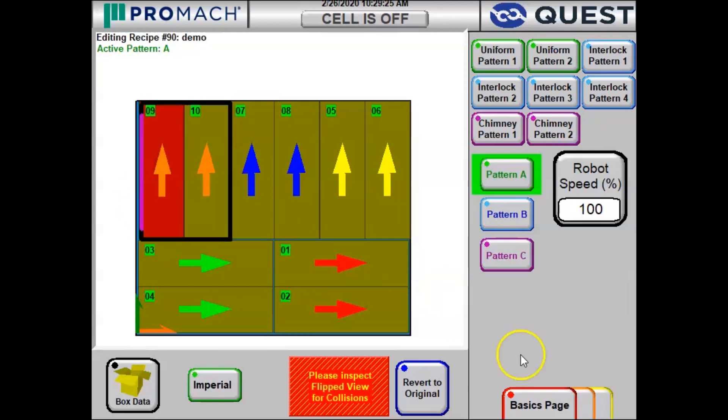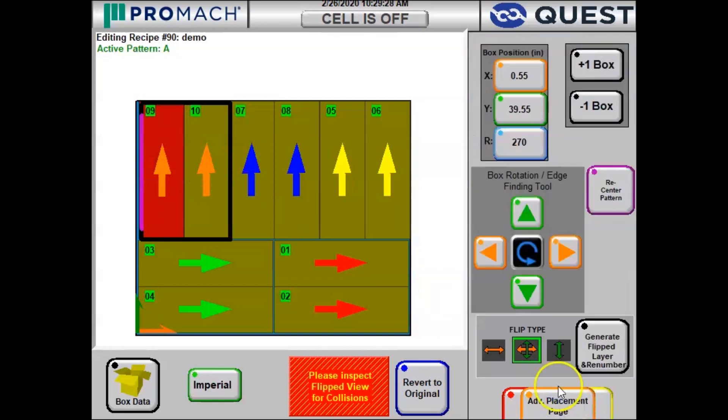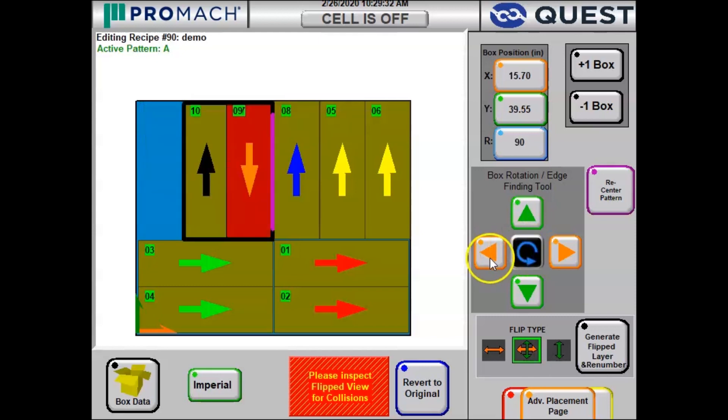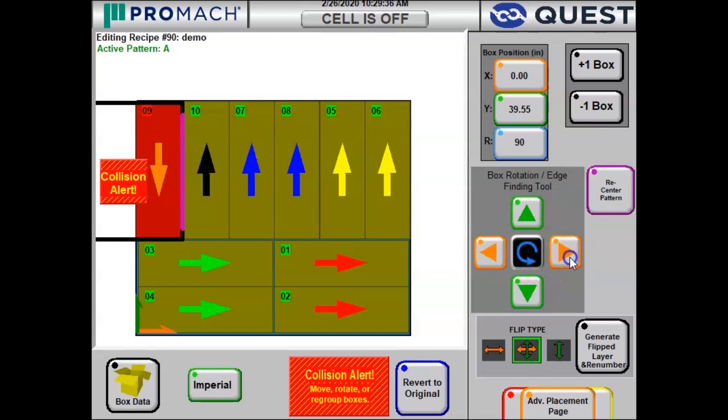So to do that, we select the box we want to flip and we're going to go to the Advanced Placement page and we're going to rotate the box around. And we're going to use these bump buttons to scoot the box until it hits something else. That allows us to get the boxes nice and tight up against each other.